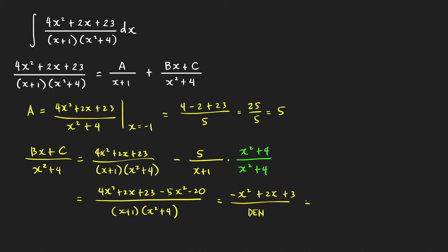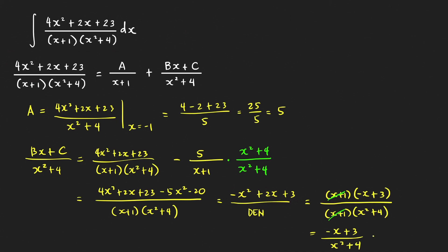We can check by trial and error that x + 1 is a factor: since the leading term is −x² and the constant is +3, the other factor is (−x + 3). Canceling (x + 1) leaves (−x + 3)/(x² + 4), so B = −1 and C = 3 — the same values as before. I hope you liked the tips in this video. Thanks for watching, and hope to see you next time.